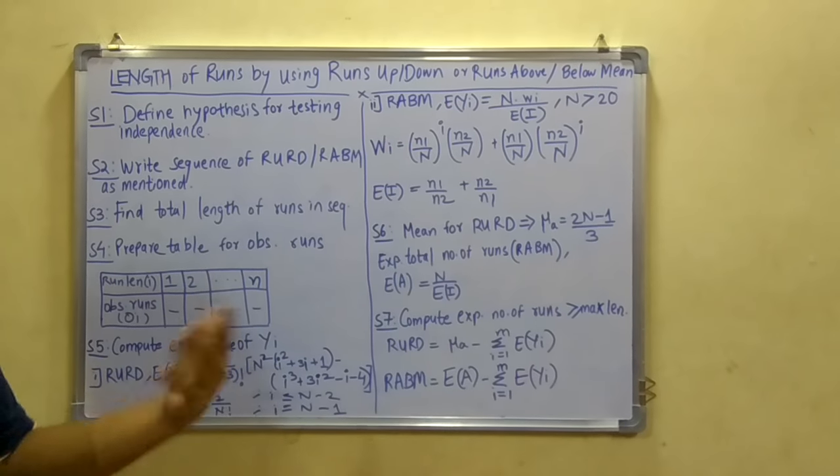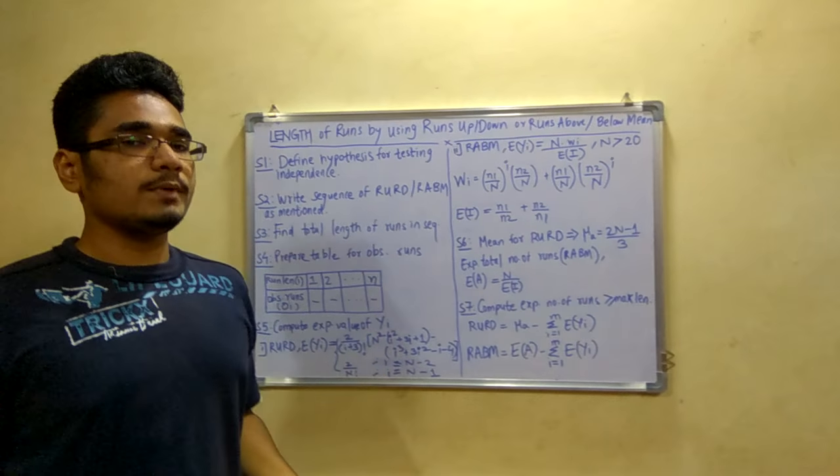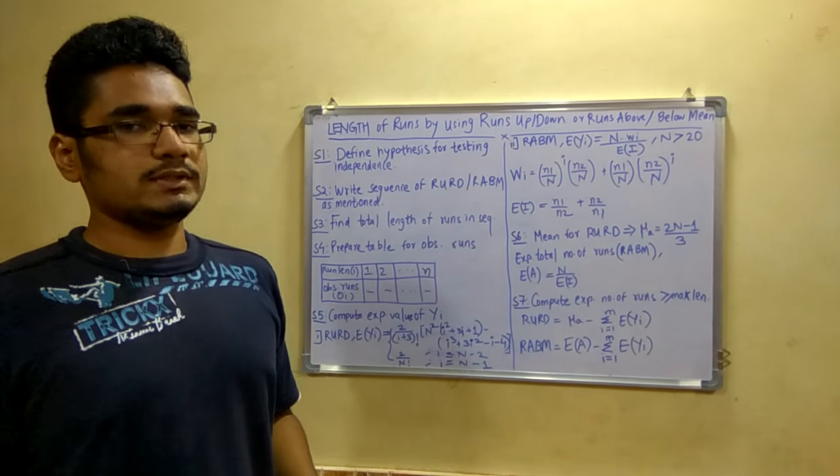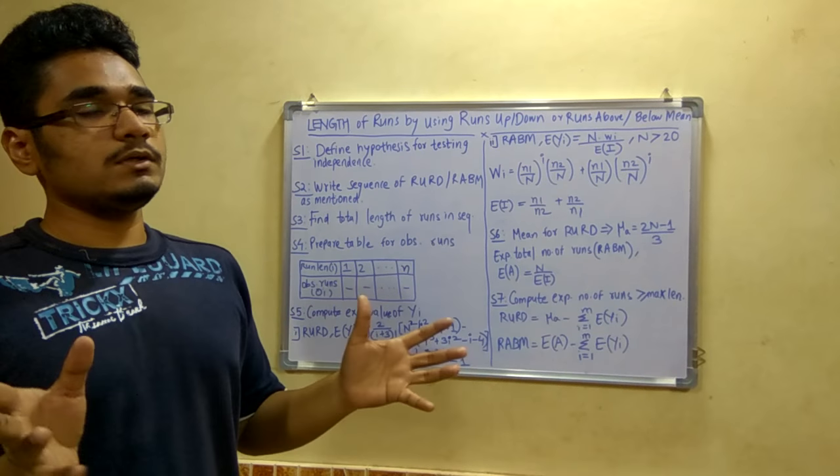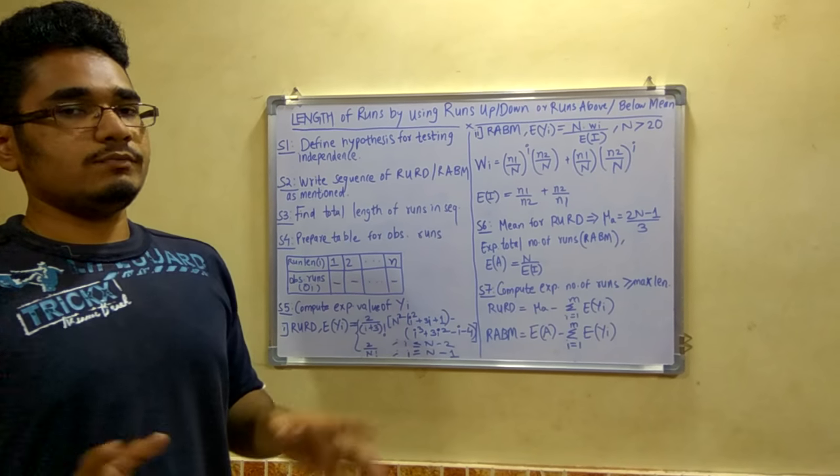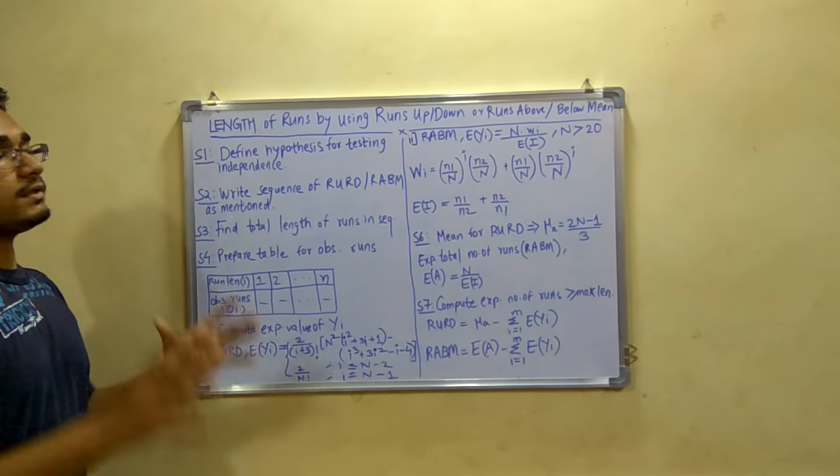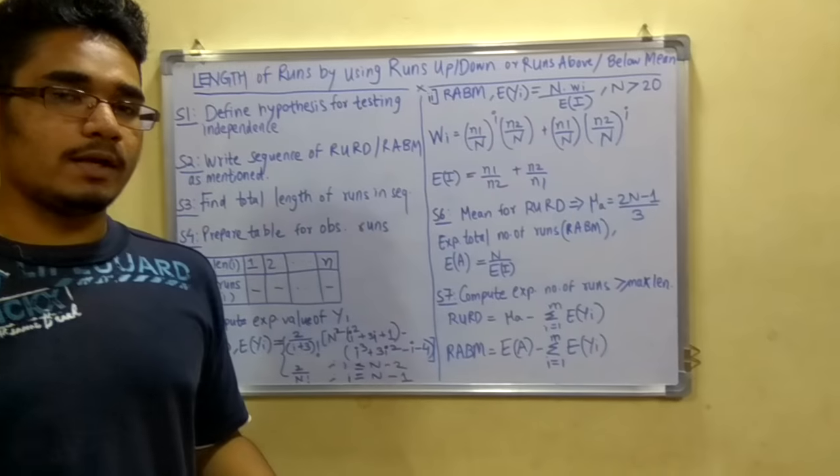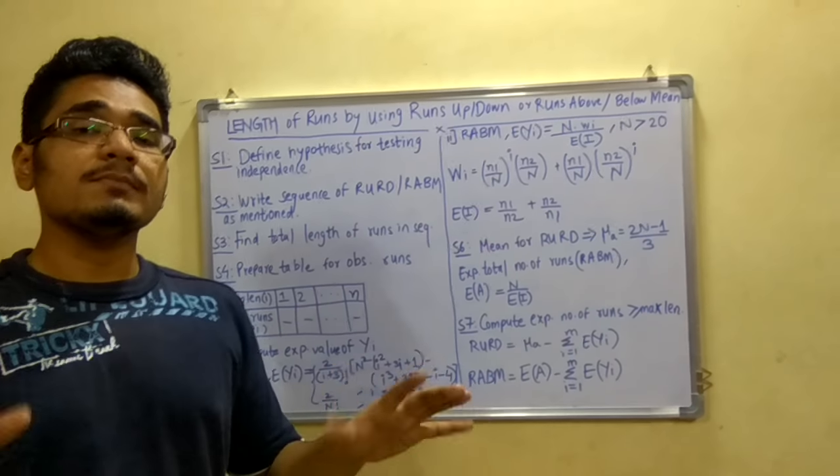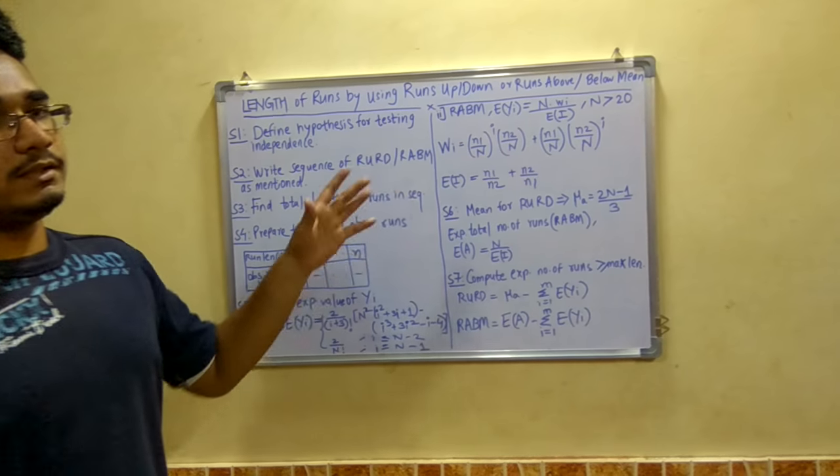Now in the question they will mention that you have to solve this problem by using runs up and down or runs above or below the mean. You have to see the question and do accordingly - not both in the same problem. Next you have to find the total length of the runs in the sequence. Either it is 3 lengths or 4 lengths or maximum 5 lengths will be given in the problem. You have to determine that in the third step.